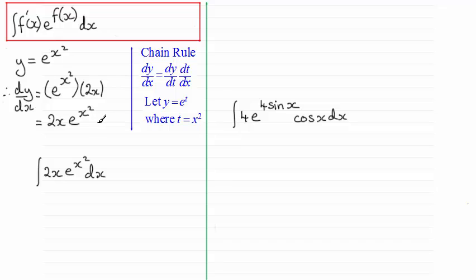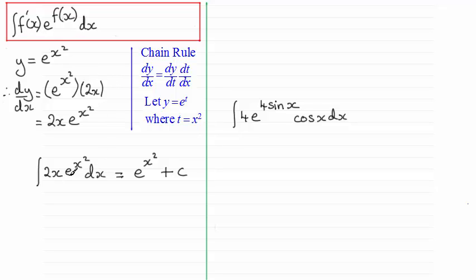Rearranging, we get 2x times e to the power x squared. Notice that if we differentiate e to the power x squared with respect to x we get this result — the same as what we have here. So when it comes to integrating this, the result must be e to the power x squared plus a constant of integration, plus c.